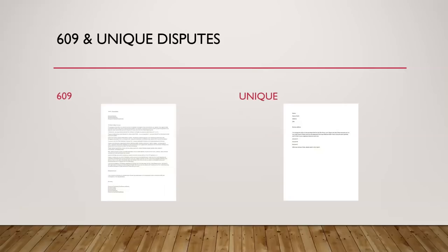First we're going to start with the 609 versus unique disputes. On the left you have the 609 template, and on the right you have a unique dispute. The difference between the two — you can see this without me even clicking on either — is that the left one is super long, probably says a bunch of filler content, and the one on the right is very short and to the point. It's just: account ABC, this is the reason, print it and send it.